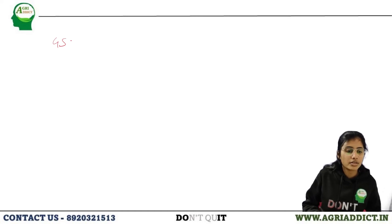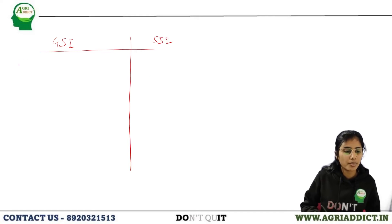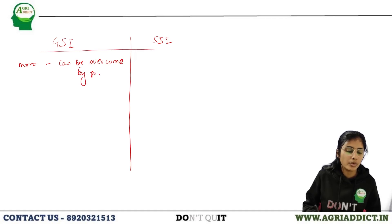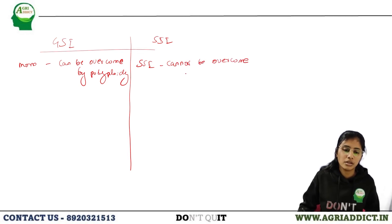Gametophytic self-incompatibility, when monofactorial, can be overcome by polyploidy. Sporophytic self-incompatibility, however, cannot be overcome or broken down by polyploidy.